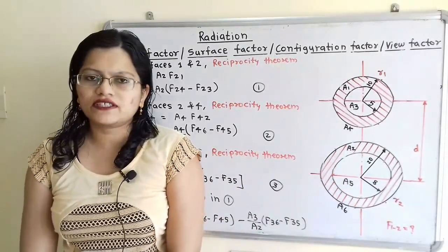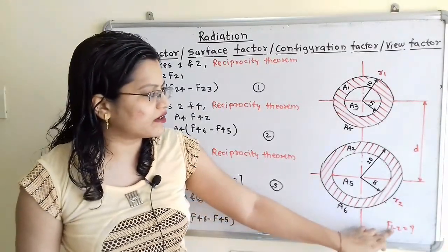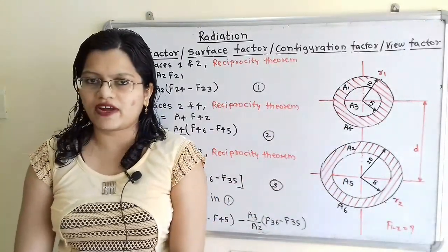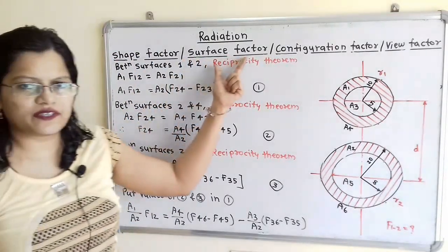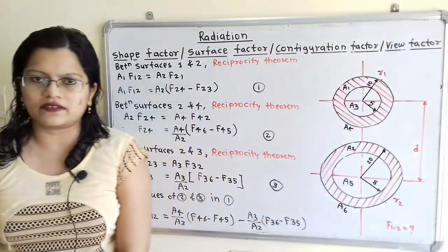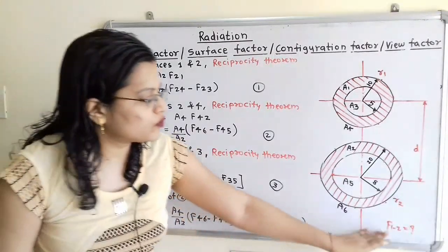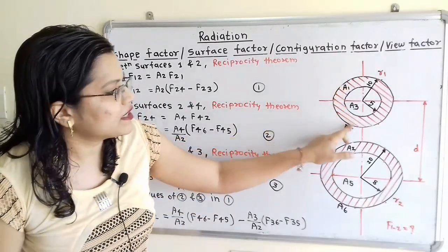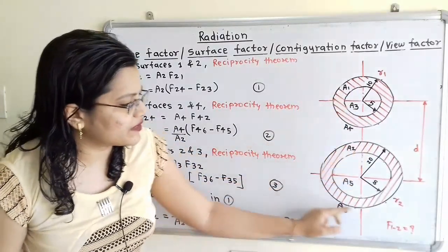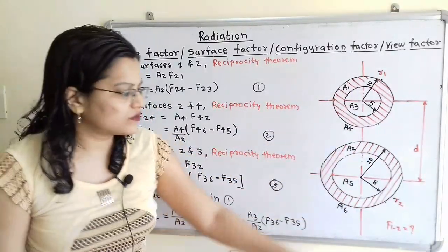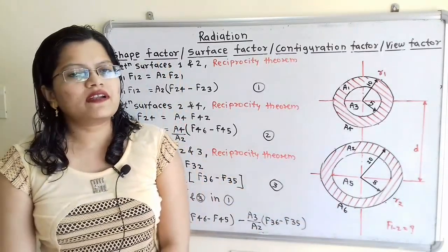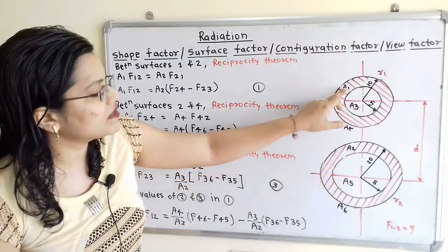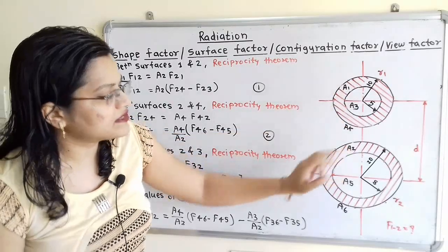The question requires finding the shape factor of ring 1 with respect to ring 2. The shape factor F(1→2), also known as the surface factor, configuration factor, or view factor, represents the fraction of radiation emitted by surface A1 that reaches surface A2. We apply the reciprocity theorem between surfaces A1 and A2.